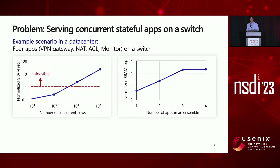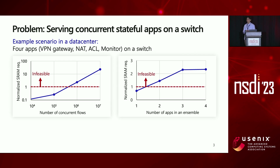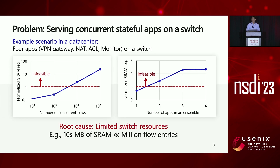We also vary the number of apps while fixing the number of flows to one million, and the switch can support more than one app in this case. So the root cause is obviously limited switch resources such as ALU and memory.